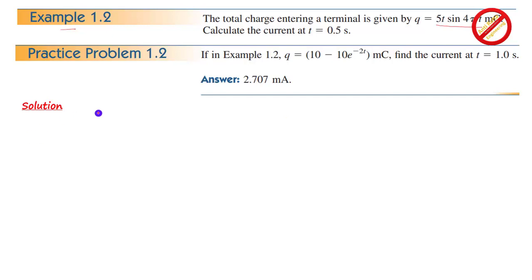So, first of all, if DC current, the charge is equal to Q equal to I times T. If I take it to the left, the value of I equal to Q by T.